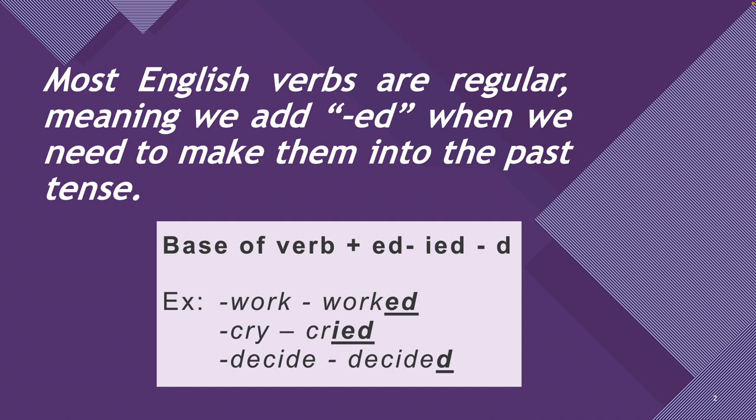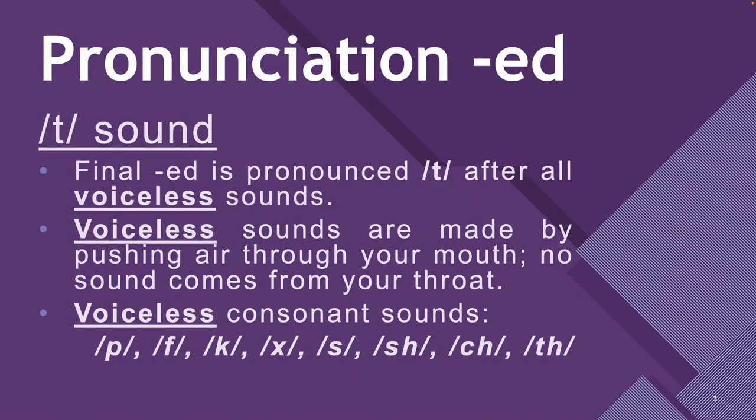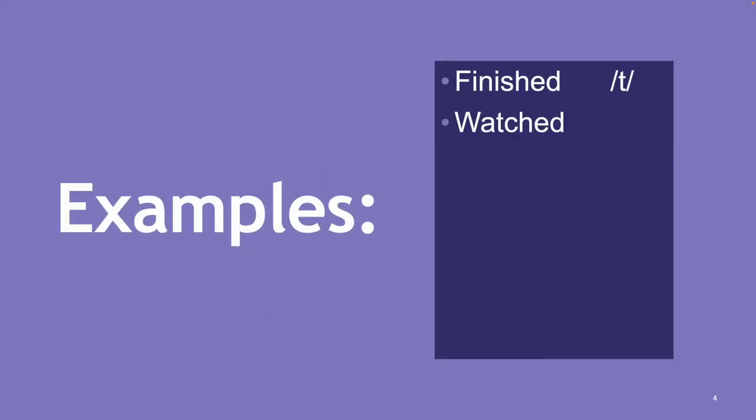Pronunciation: /t/ sound. Final -ed is pronounced /t/ after all voiceless sounds. Voiceless sounds are made by pushing air through your mouth. No sound comes from your throat. Voiceless consonant sounds include p, k, s, ch, sh, f, and theta. How about some examples? We have finished, watched, danced, looked, hoped, laughed, and fixed.